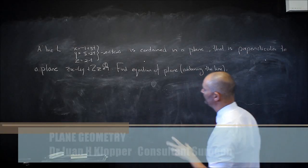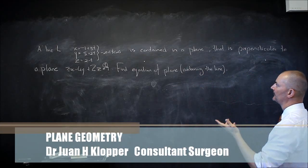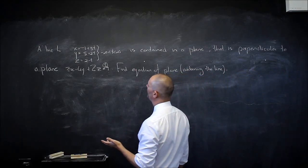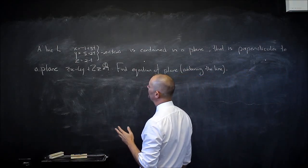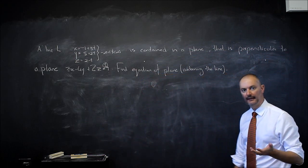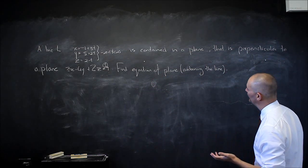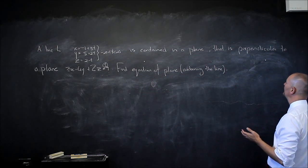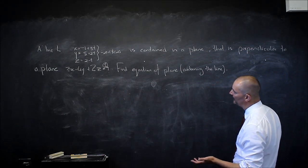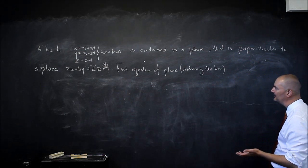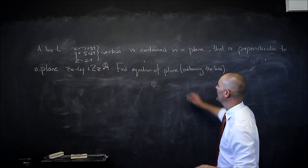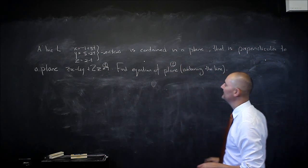This is a very important problem. I have a line L given in parametric form: x equals negative 1 plus 3t, y equals 5 plus 2t, z equals 2 minus t, where t ranges from negative infinity to positive infinity. This line is contained in a plane that is perpendicular to another plane, 2x minus 4y plus 2z equals 9 — let's call that plane 1. Find the equation to the other plane, plane 2, containing that line.